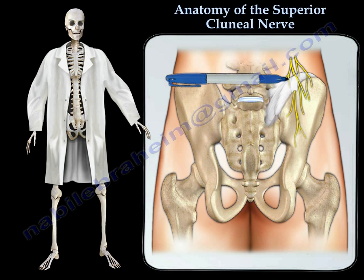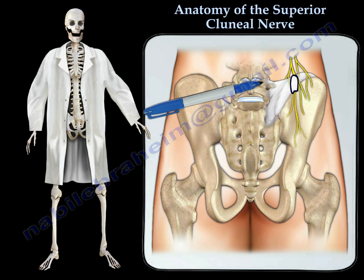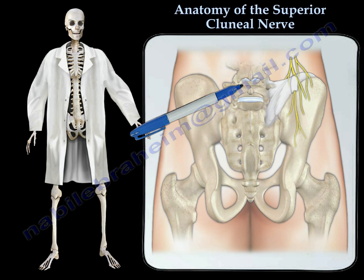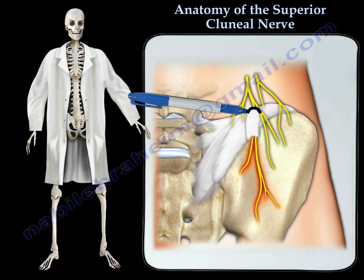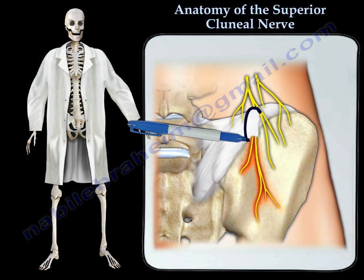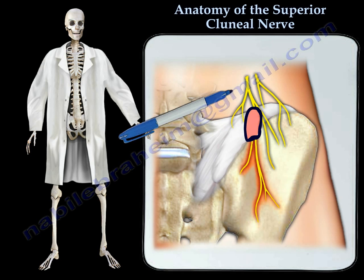The medial branch of the superior cluneal nerve is confined within a tunnel consisting of the thoracolumbar fascia. This tunnel can be a problematic area causing impingement of the nerve, similar to carpal tunnel syndrome in the wrist where the fascia constricts the median nerve.